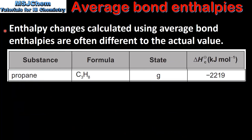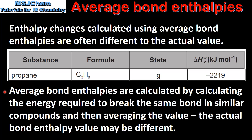Enthalpy changes calculated using average bond enthalpies are often different to the actual value. The enthalpy change of combustion of propane is negative 2219 kJ, which differs from our calculated value of negative 2034 kJ per mole. The reason for this difference is that average bond enthalpies are calculated by averaging the energy required to break the same bond in similar compounds, so the actual bond enthalpy value may differ from the average.